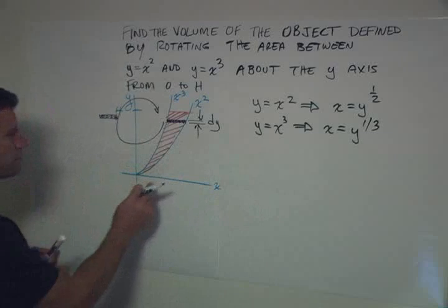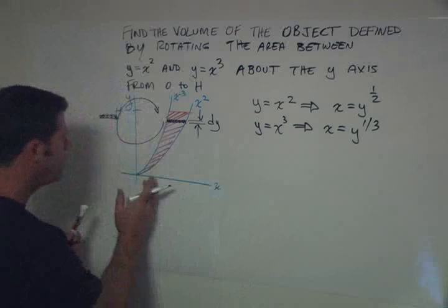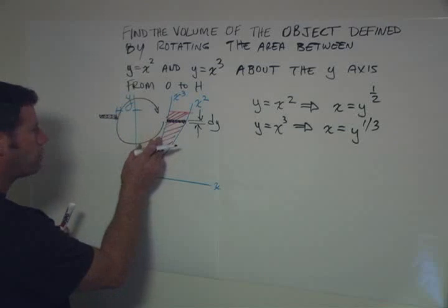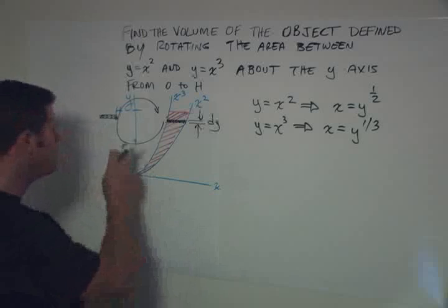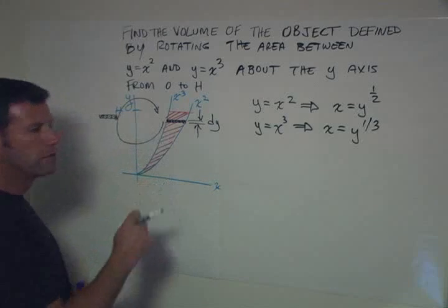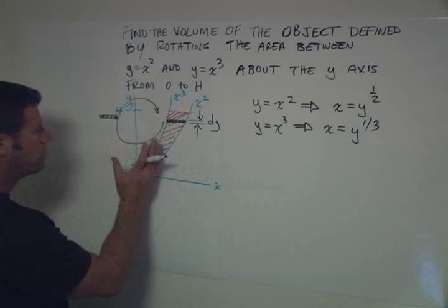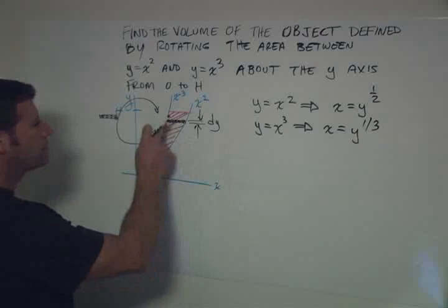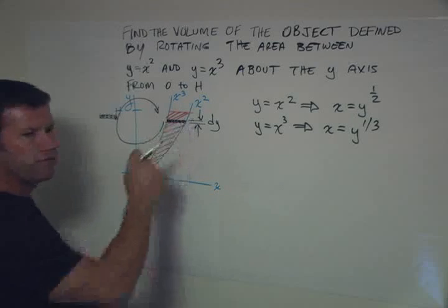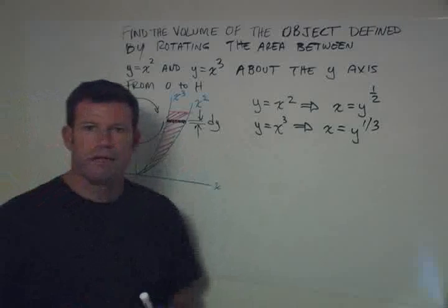So, given an x, initially we were given the situation where the x is the independent variable. Given an x, we go up to the curve and that gives us a y. In this case, we're starting with a y value, going over to the curve and then down to an x value. But it's the same thing. So now x squared, obviously, is going to be further away than x cubed. And so x squared is going to define our outer radius. And x cubed will define the inner radius.